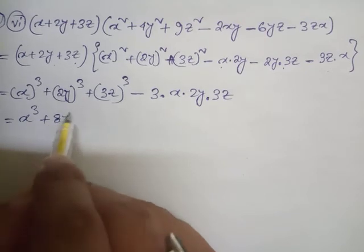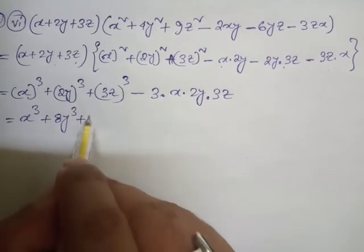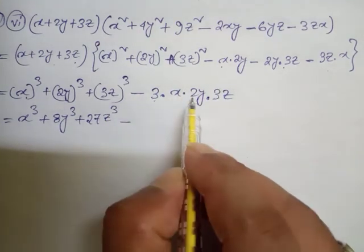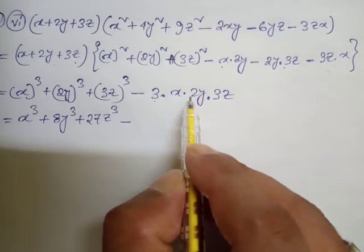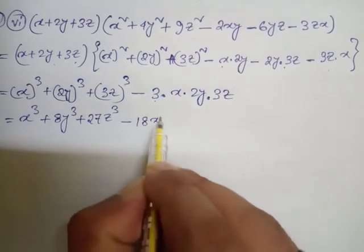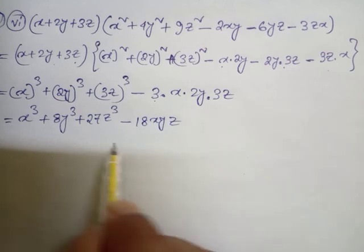3 times 3 is 9, 9 times 2 is 18, 18xyz. This is the formula of number 4 used for 2 roman 6. This is the answer.